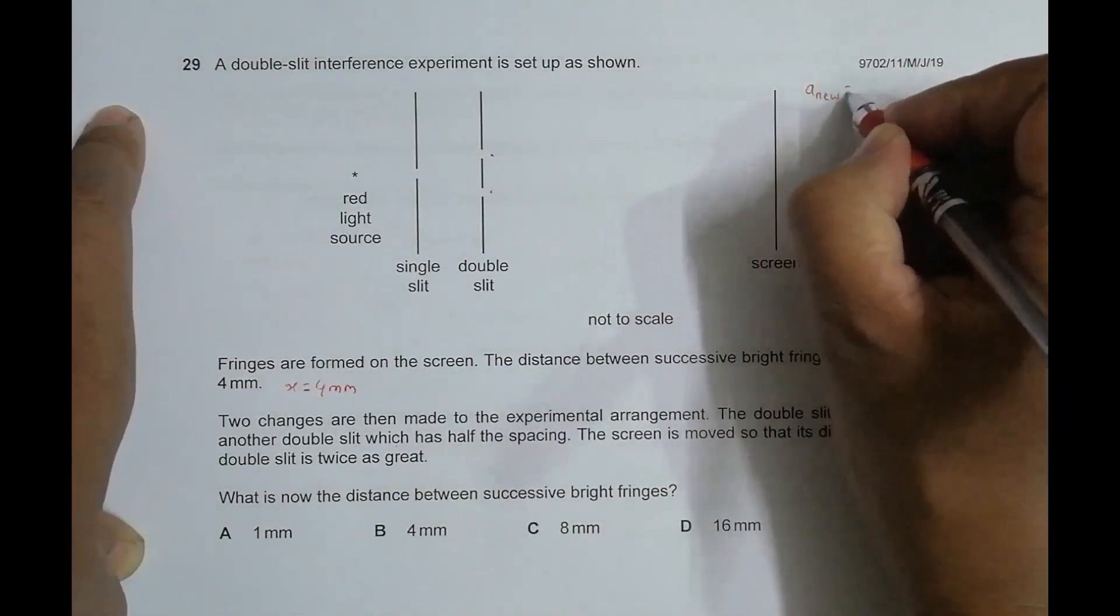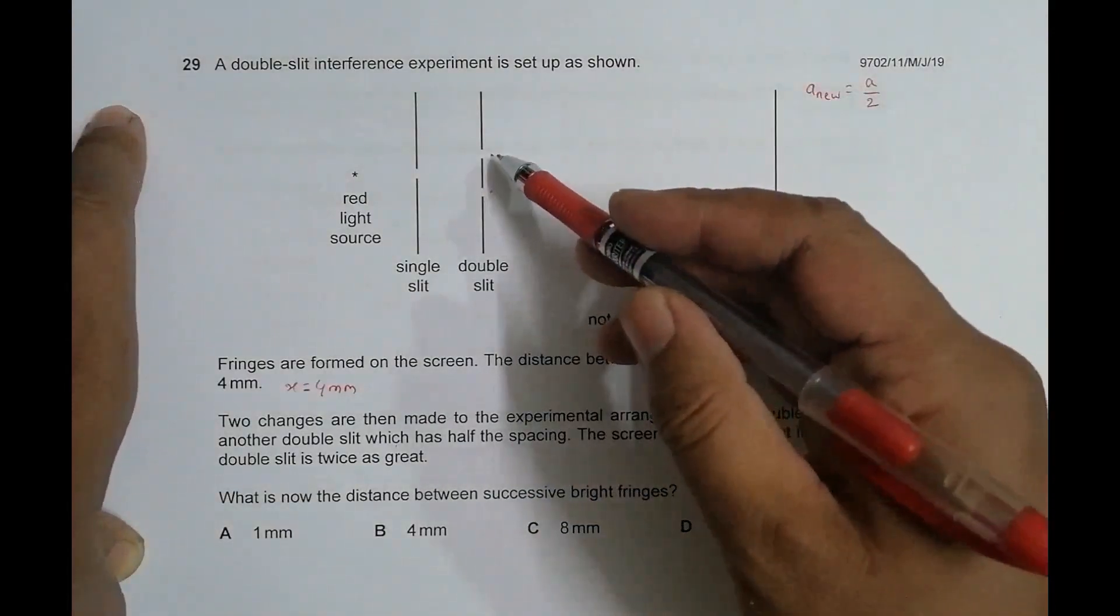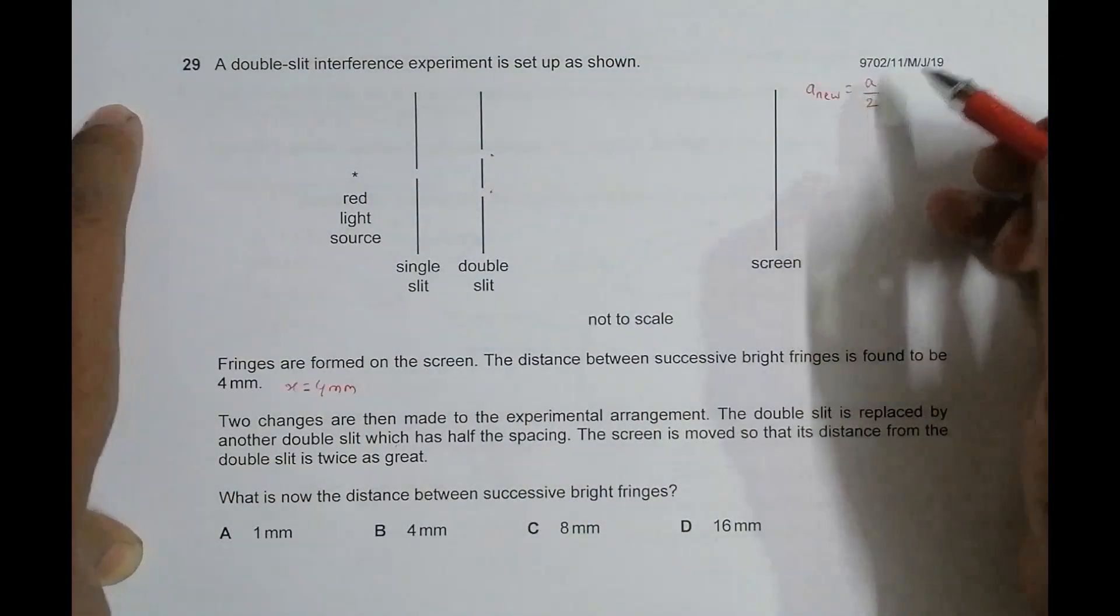That means according to symbols we have a_new is equal to a by 2. a_new is the new separation of the slits and a is the old one.